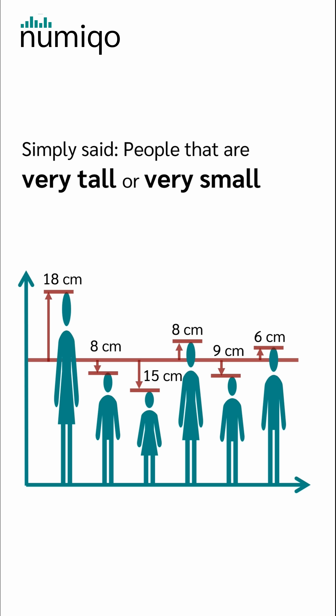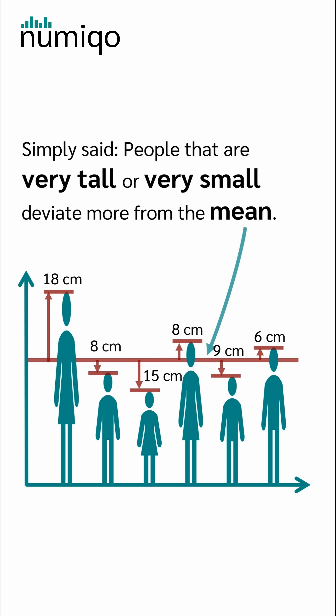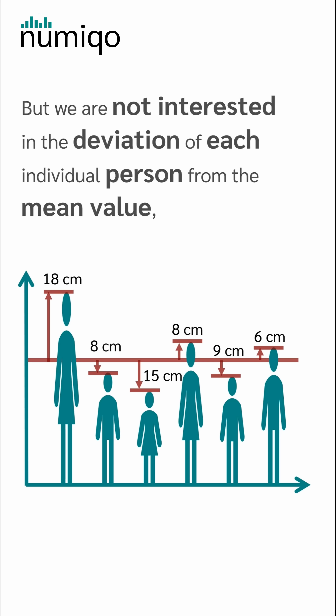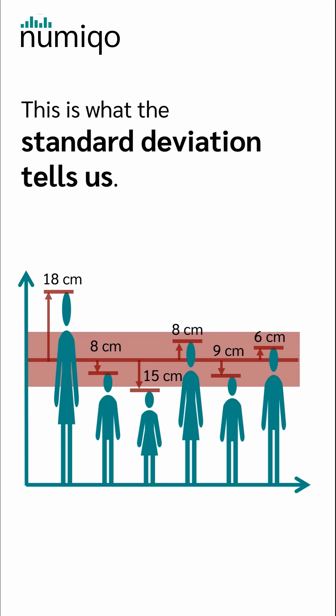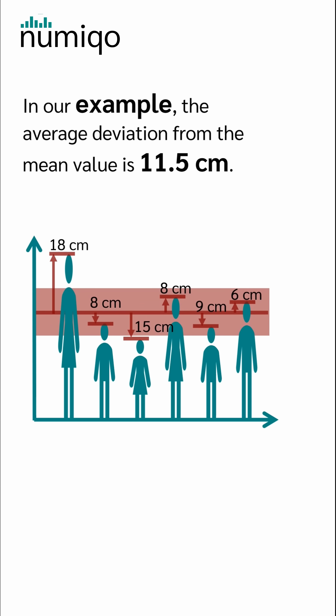Simply said, people that are very tall or very small deviate more from the mean value. But we are not interested in the deviation of each individual person — we want to know how much the persons on average deviate from the mean value. This is what the standard deviation tells us. In our example, the average deviation from the mean value is 11.5 cm.